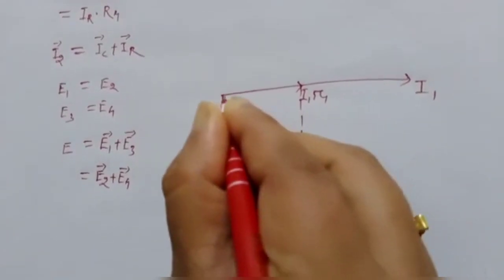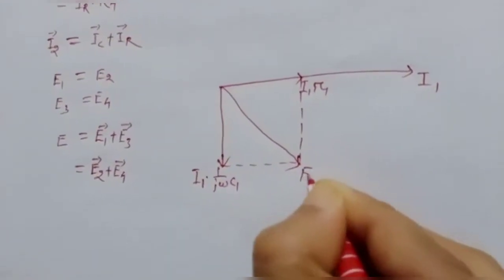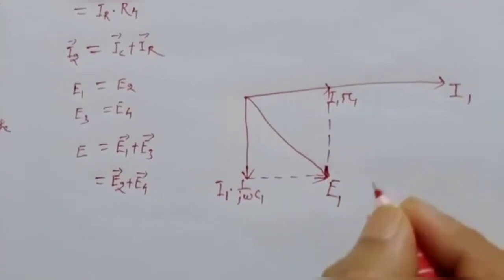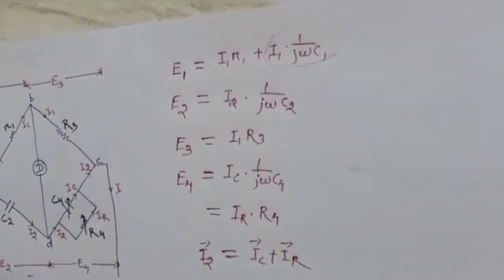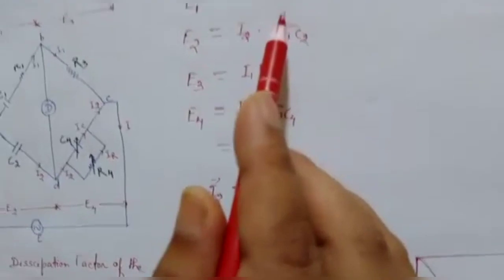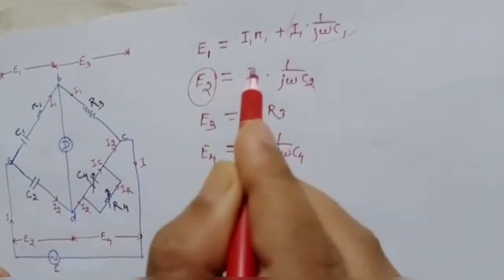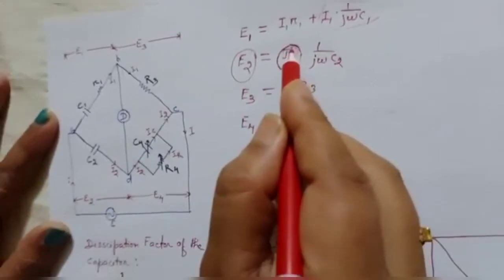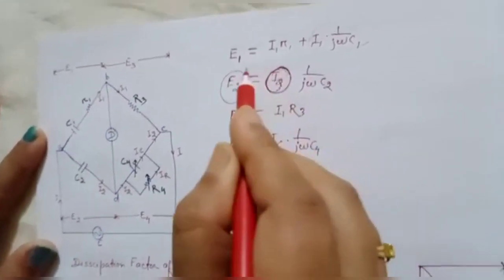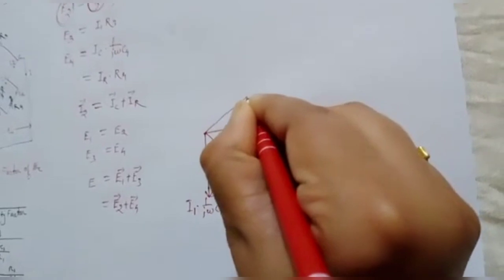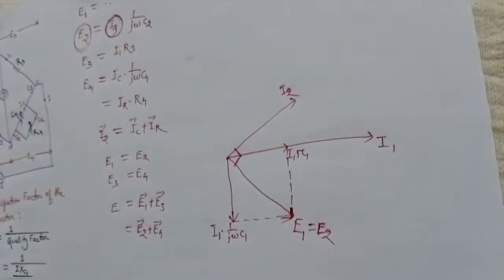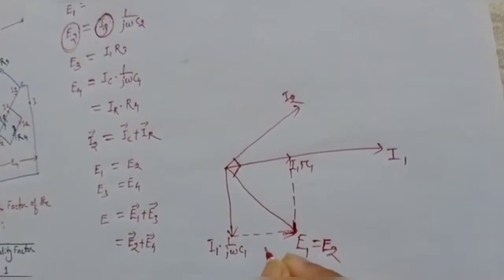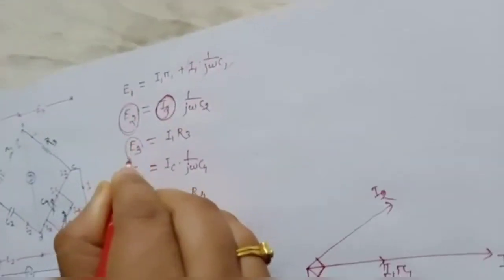The phasor sum of I1·R1 and I1·(1/jωC1) gives E1. Since E1 equals E2 and E2 equals I2·(1/jωC2), which is a purely capacitive branch, the current I2 must lead E2 by 90 degrees. So once we have E2, we can draw I2 leading E2 by 90 degrees.